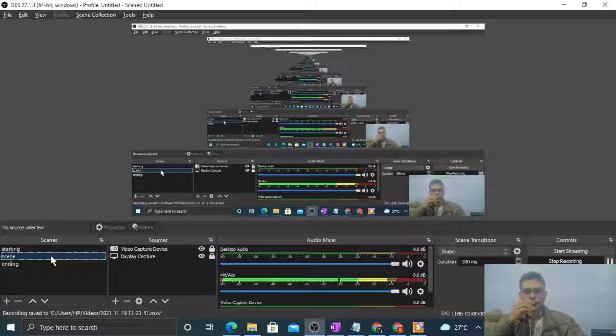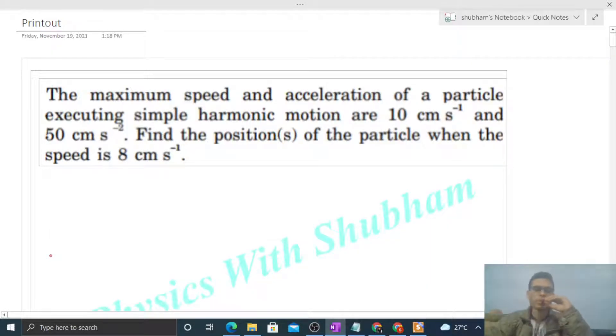Okay, hi everyone. So today let's discuss this interesting problem. It says the maximum speed and acceleration of a particle executing simple harmonic motion are 10 centimeter per second and 50 centimeter per second square. Find the position of the particle when the speed is 8 centimeter per second.